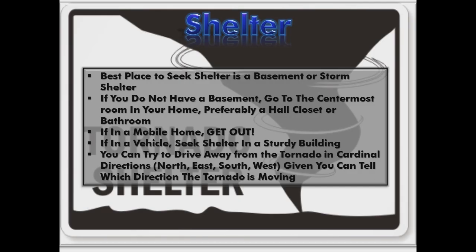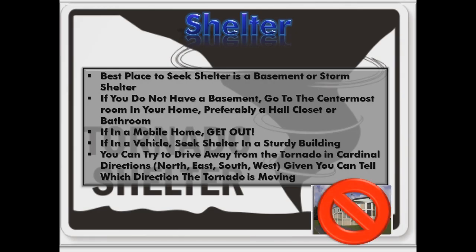If you're in a mobile home, get out. Mobile homes are not safe even if they are mounted to a foundation — they are not made to withstand strong winds, let alone a tornado. If you're in a vehicle or outdoors, the best thing to do is get into a sturdy building quickly. Being in your vehicle is never safe and you should never try to outrun a tornado. If you are in a car and adequate shelter is not available and you can determine which direction the tornado is moving, you can try to drive in cardinal directions — north, east, south, or west — away from the tornado's path. So if it's moving east, you would drive south. However, you may not see flying debris, and you could enter the hail core or heavy rain where visibility is reduced.